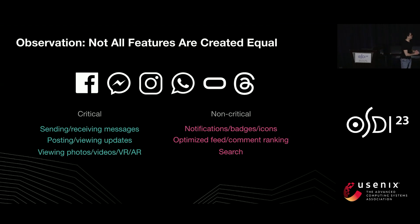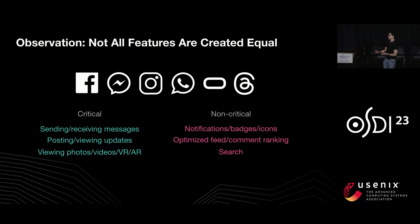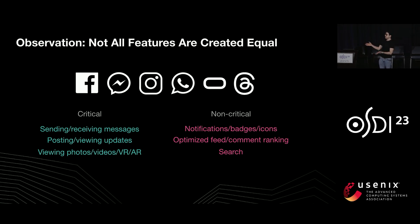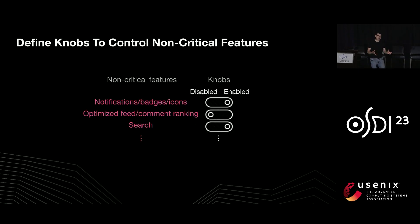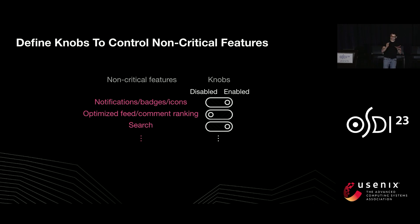Not all features are actually created equal. In Meta's apps, there are certain features we consider critical, like the ability to send and receive messages, and certain non-critical ones, such as notifications, complex feed ranking, and search. These will vary depending on the app. Our key idea is to define something called knobs that encapsulate the control flow of non-critical features and enable us to dynamically turn that control flow on or off during emergency scenarios.